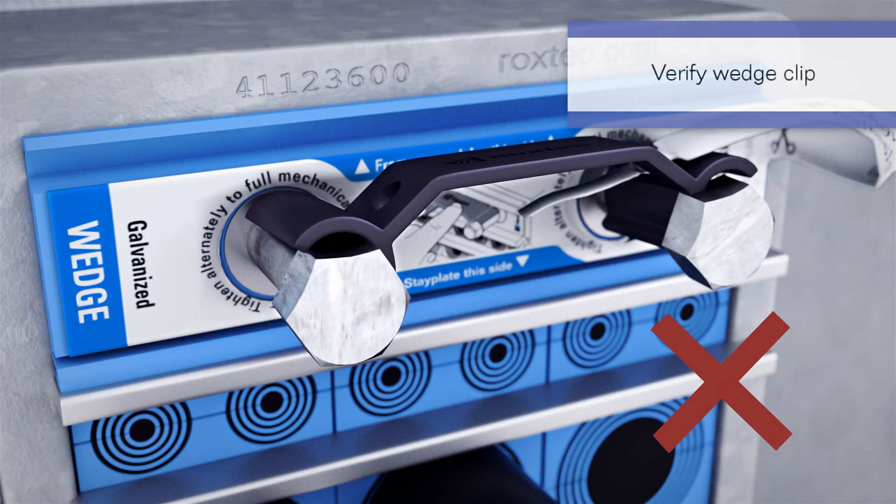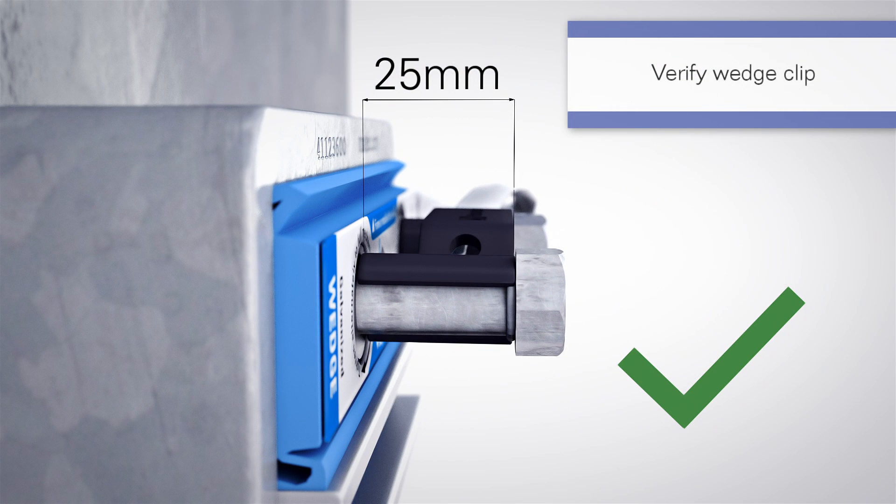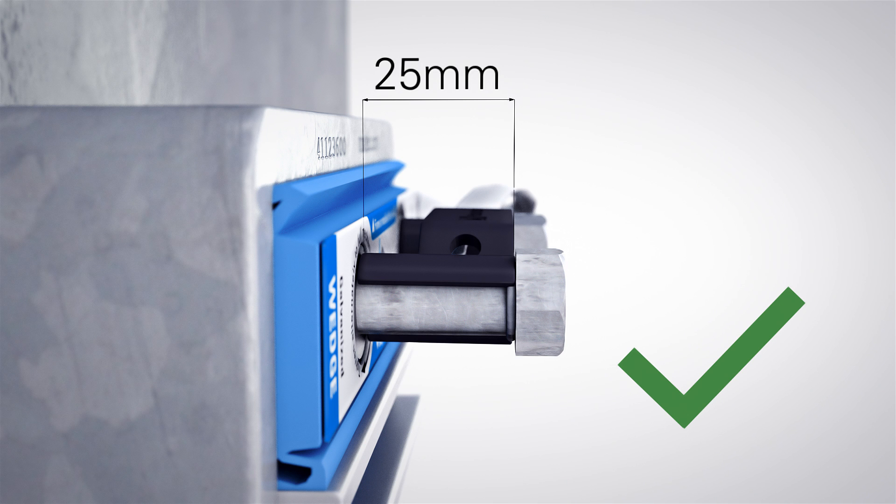Verify that the wedge clip is correctly installed and that it fits behind the bolt heads. If the clip is missing, measure the visible length of the bolt from fitting to bolt head. It must be 25 millimeters.